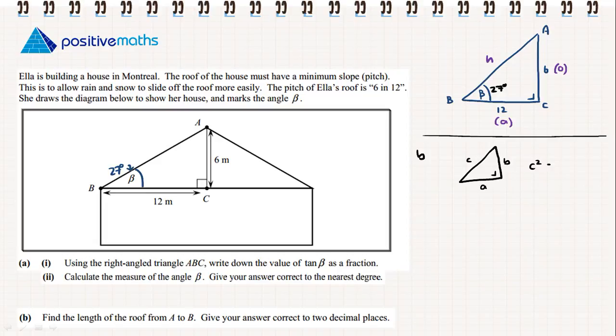The theorem of Pythagoras tells us that c² is equal to a² plus b². So we're going to use this to find h. So for our question, h² is going to be equal to 6² plus 12².